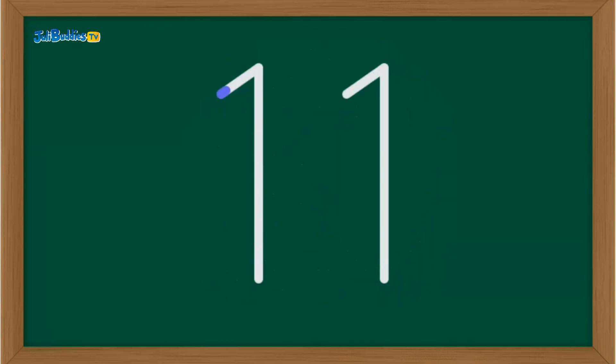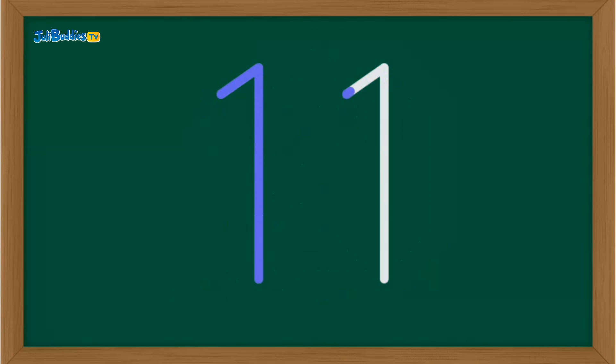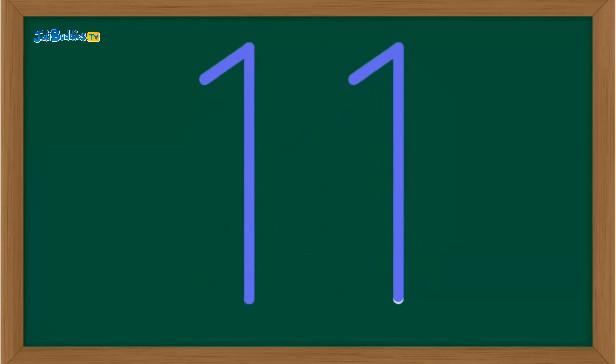Now, number eleven. That's two straight lines, one after the other. Easy peasy. That's eleven. Woohoo!